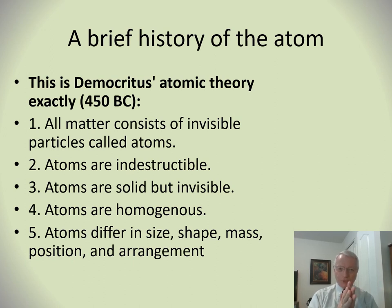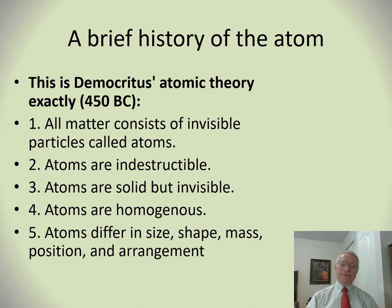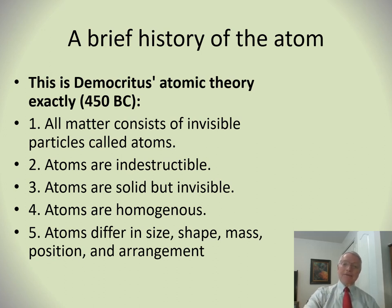I'm going to give you a brief history of the atom. This history starts in 450 BC with a Greek philosopher named Democritus. His theory: one, all matter consists of invisible particles called atoms — pretty good. Two, atoms are indestructible — well, we didn't get that one right. Three, atoms are solid but invisible — a little iffy. Atoms are homogeneous, meaning a lump of stuff the same all the way through — didn't get that one right either. And atoms differ in size, shape, mass, position, and arrangement — actually pretty accurate.